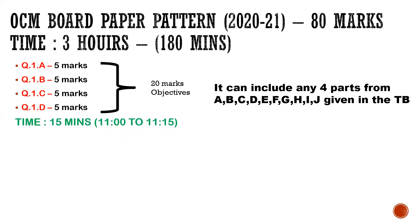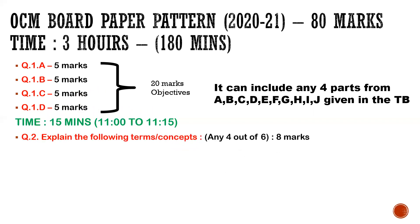For question number one — objectives — if the paper starts at 11 AM, give 15 minutes to the first objectives. All 20 marks of parts A, B, C, D should be complete by 11:15 AM. One important thing: during fill in the blanks, write the full sentence and underline the answer — write both the question and the answer in blue pen, but underlining the answer is compulsory. Coming to question number two — explain the following terms or concepts — writing four out of six — the maximum time to allot here is 20 minutes, that is 11:15 to 11:35.